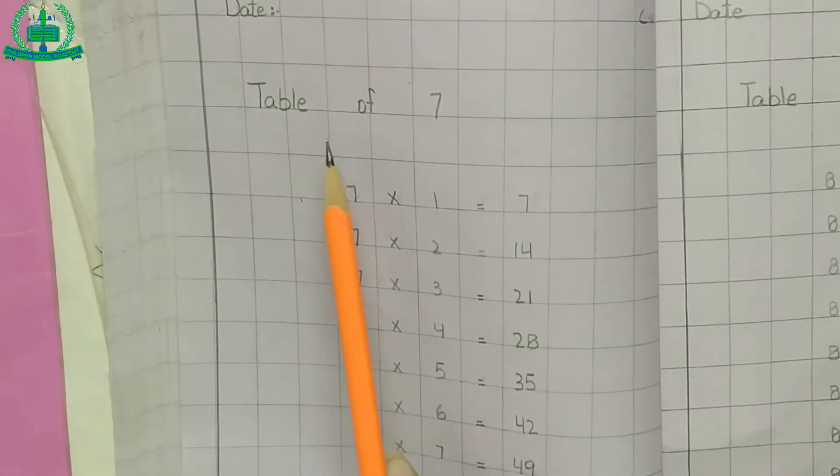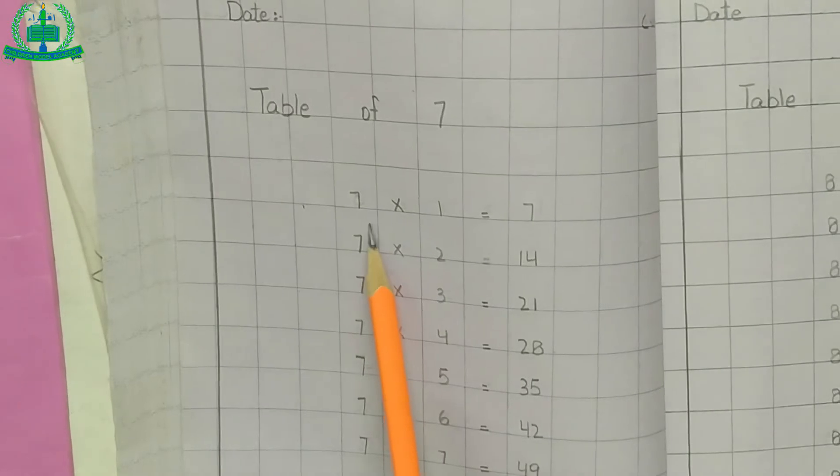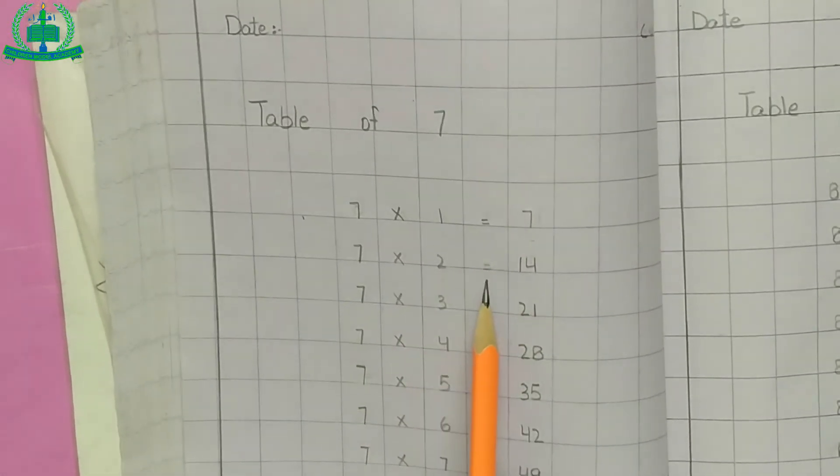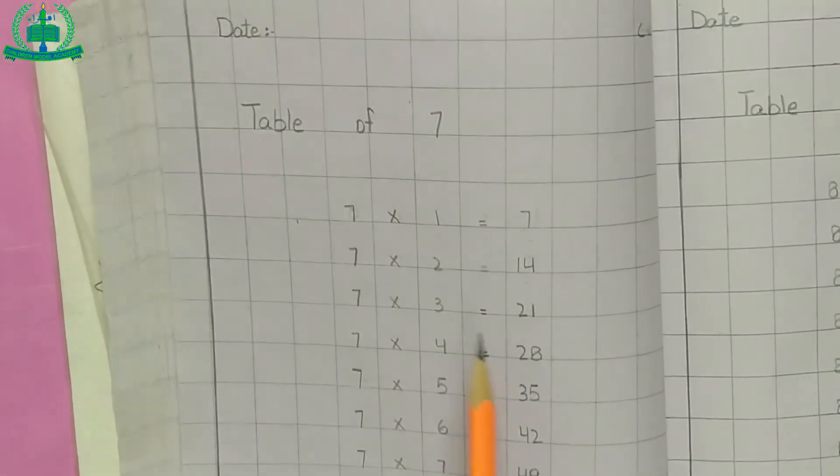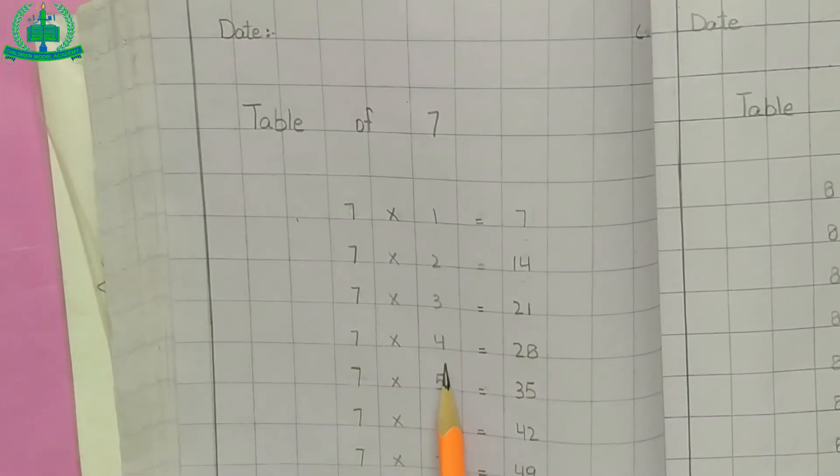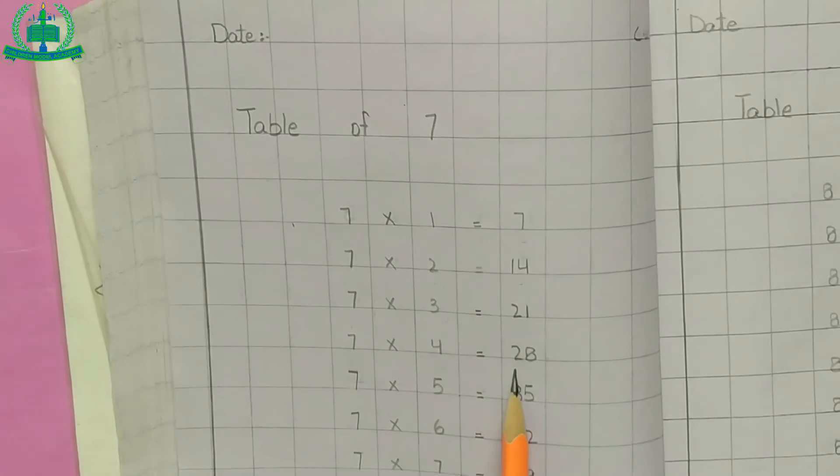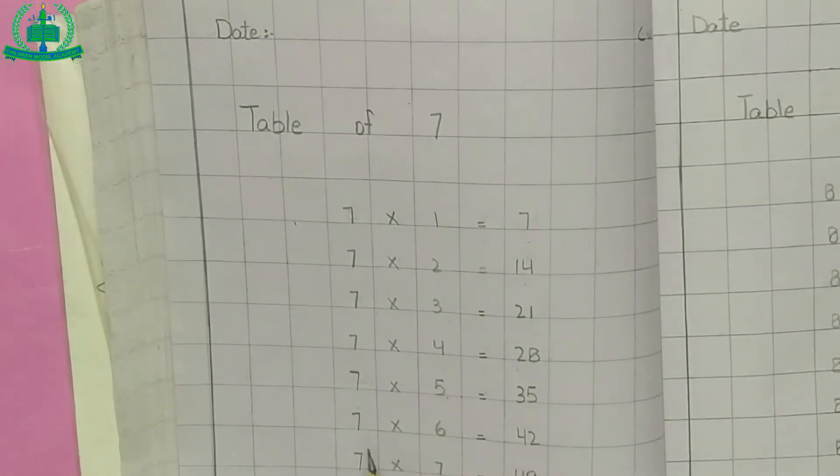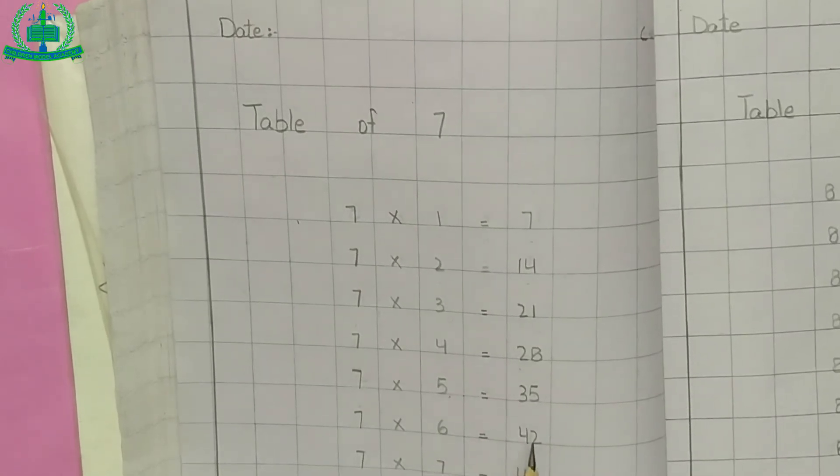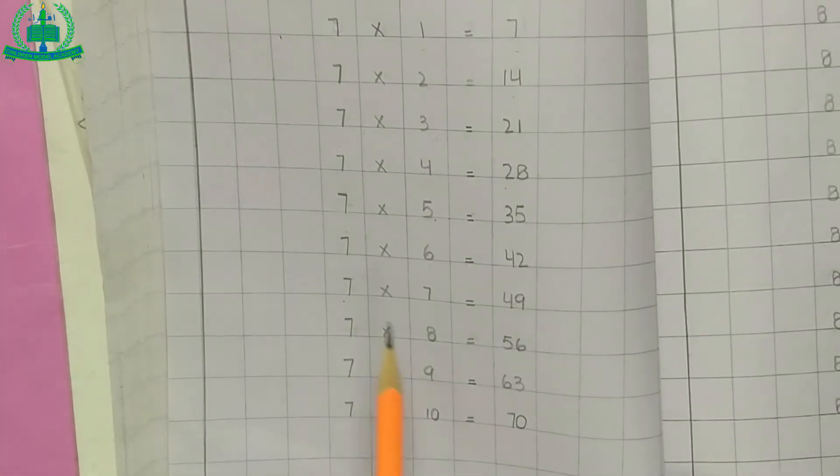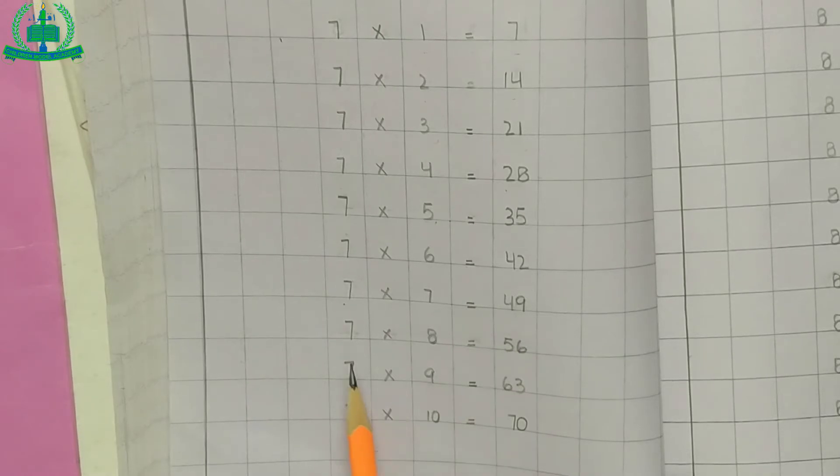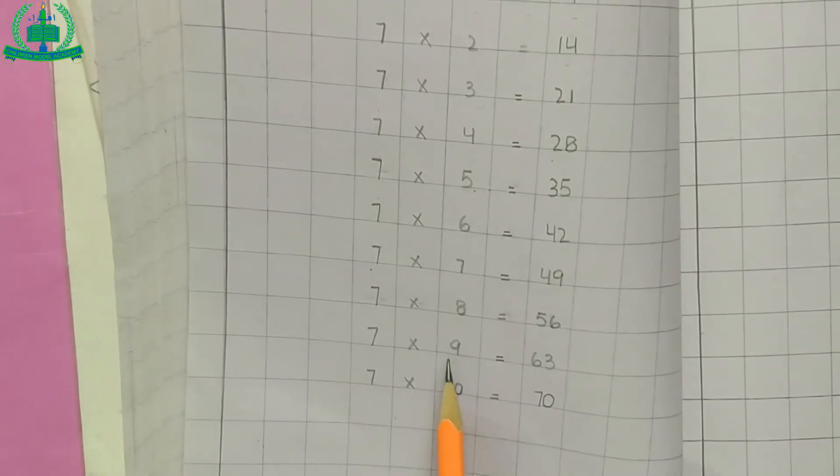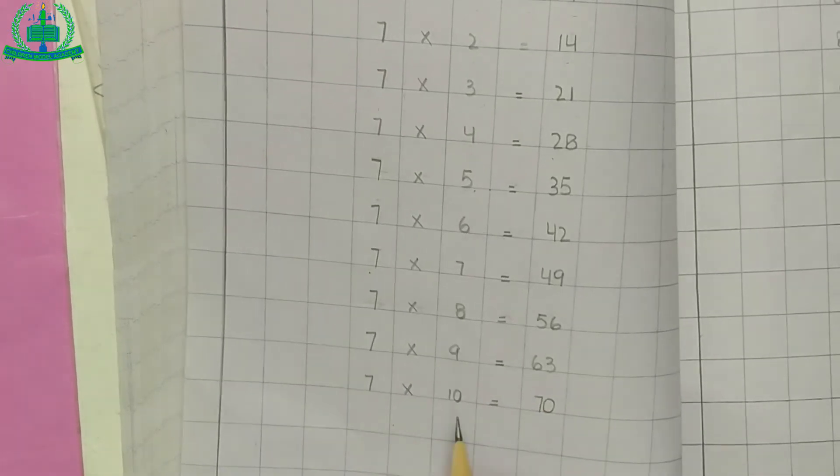Now table of 7. Seven one time is seven, seven two times is fourteen, seven three times is twenty-one, seven four times is twenty-eight, seven five times is thirty-five, seven six times is forty-two, seven seven times is forty-nine, seven eight times is fifty-six, seven nine times is sixty-three, seven ten times is seventy. Do it in your copy.